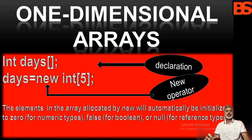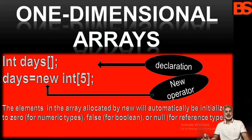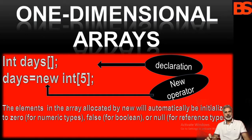To link 'days' with an actual physical array of integers, you must allocate one using 'new' and assign it to days. 'new' is a special operator that allocates memory. The declaration is: int days[]; and the allocation is: days = new int[5]; When you use 'new' to allocate an array, you must specify the type and number of elements. This allocates a 5-element array of integers. Elements allocated by 'new' are automatically initialized to 0 for numeric types, false for boolean types, and null for reference types.